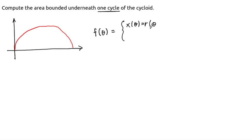so this is the x direction, the x direction continues to grow, theta minus sine of theta. And the y direction, y of theta, is equal to r times 1 minus cosine of theta.